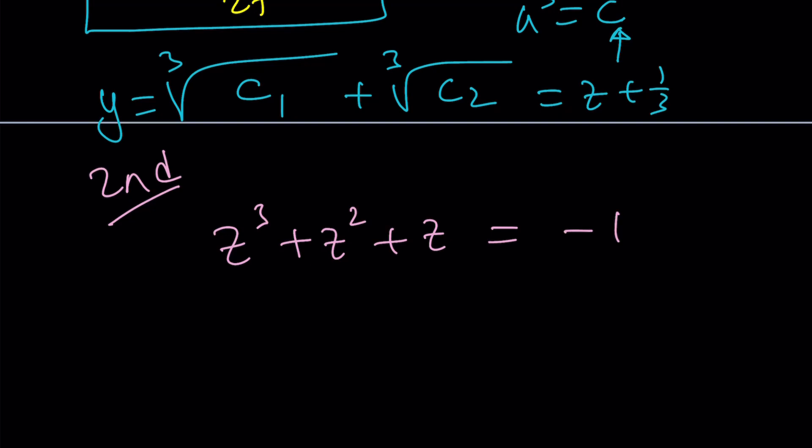Could z be 1? 1 plus 1 plus 1? Doesn't work. Could z be negative 1? Negative 1 plus 1 minus 1. And yes it does. Awesome. We found one solution. Great.